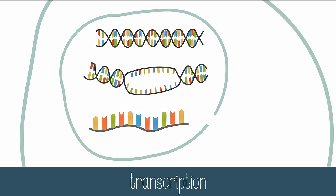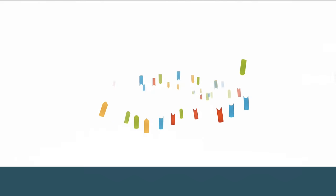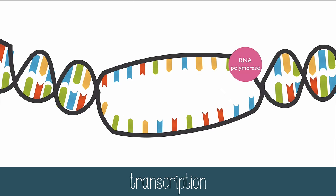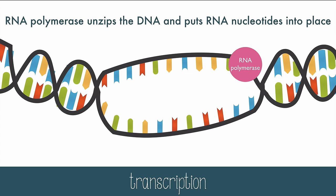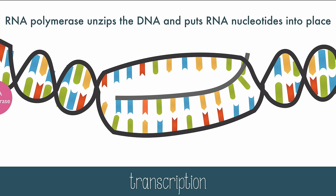A portion of the DNA is unzipped so that the mRNA can be made from the DNA like a template — that's transcription. Nucleotides of RNA match with one strand of DNA to make mRNA. RNA polymerase unzips the DNA and puts RNA nucleotides into the right place. C and G nucleotides match up.